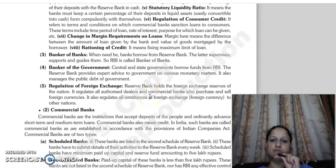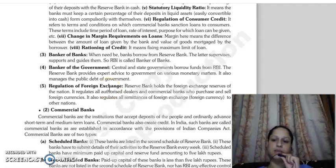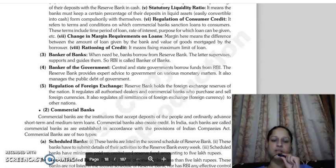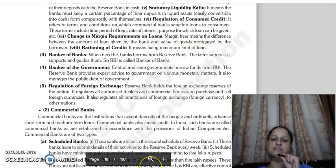What can be changed is the margin requirement on loans. Margin means — if a person takes a loan from a bank, say the bank gives a loan of 100, and the security is 20, the difference is your margin. That is, the margin is the difference between the amount of loan given by the bank and the value of the good kept as security. Then there is rationing of credit, which limits the credit a bank can grant to any person.